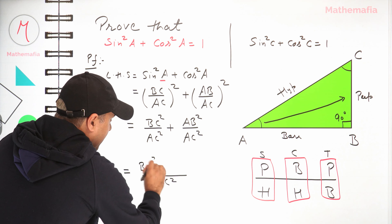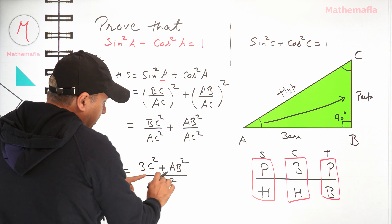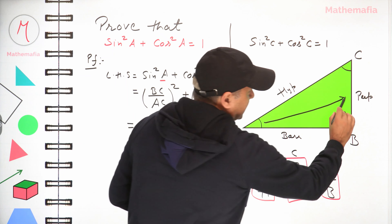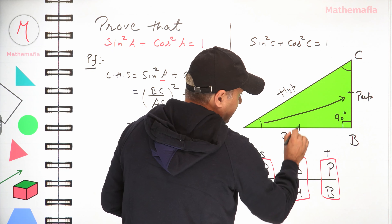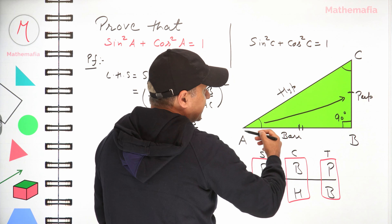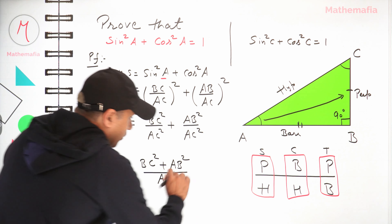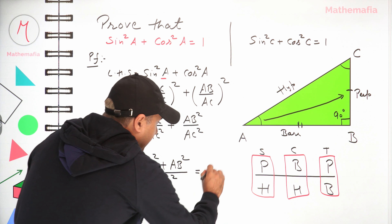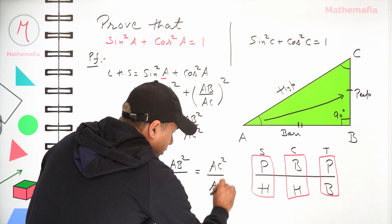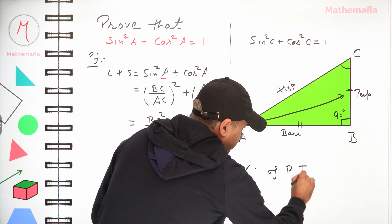Now what is BC² + AB²? BC and AB are the two shorter sides, so by Pythagoras' theorem, BC² + AB² = AC². Therefore this becomes AC² / AC².